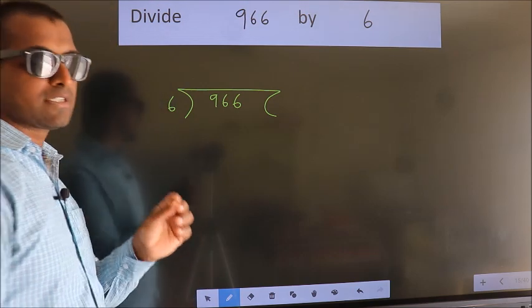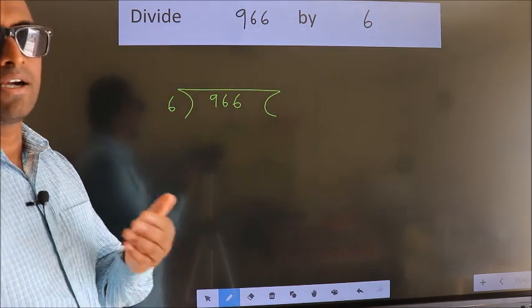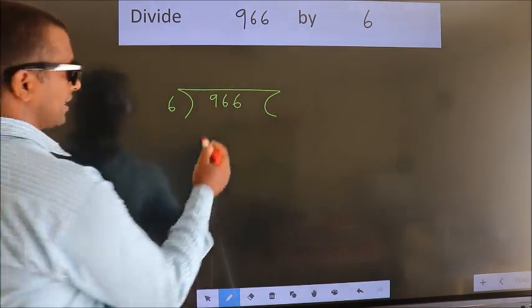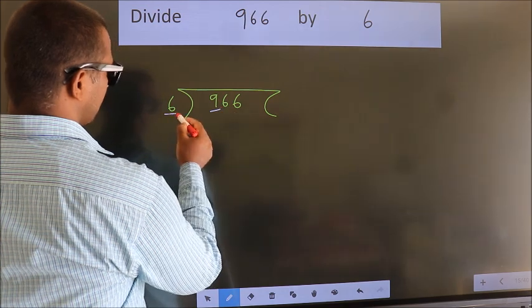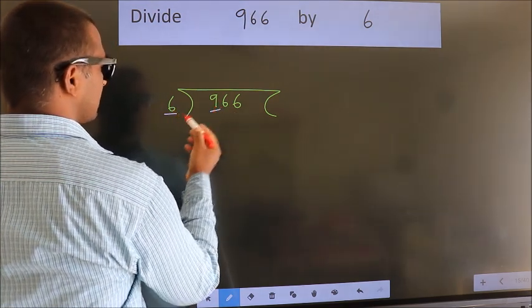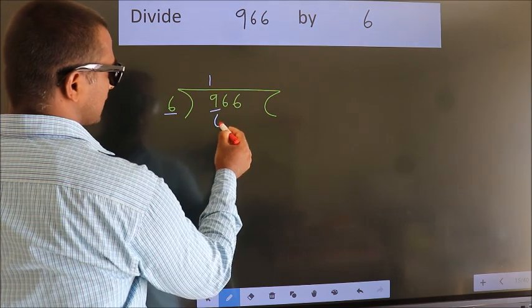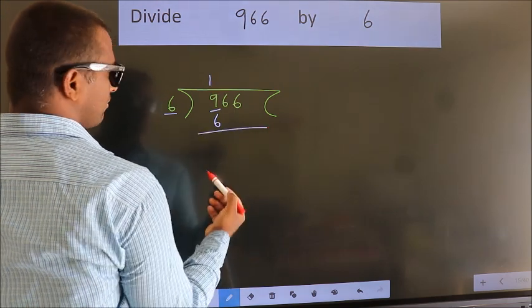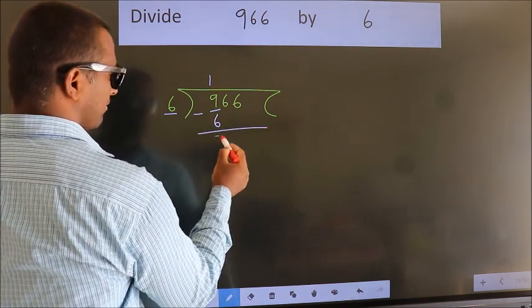This is your step 1. Next, here we have 9, here 6. A number close to 9 in 6 table is 6 once 6. Now, we should subtract. We get 3.